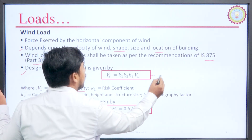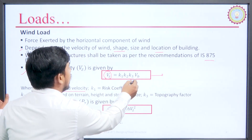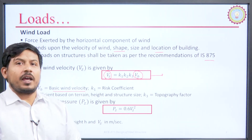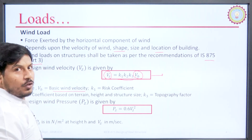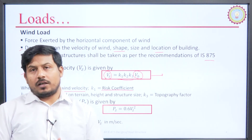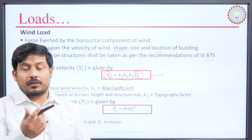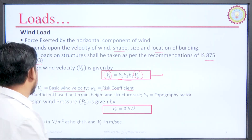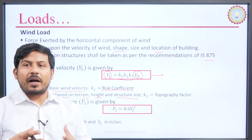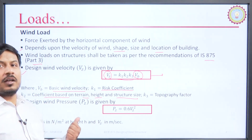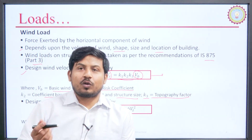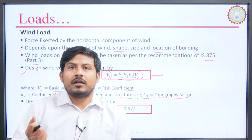The design wind velocity Vz is proportional to Vb, the basic wind velocity, whose value will be given in problems. There are coefficients k1, k2, and k3 in this equation. k1 indicates the risk factor, k2 indicates the coefficient based on terrain height and structure size, and k3 incorporates the effect of topography while getting the design wind velocity.